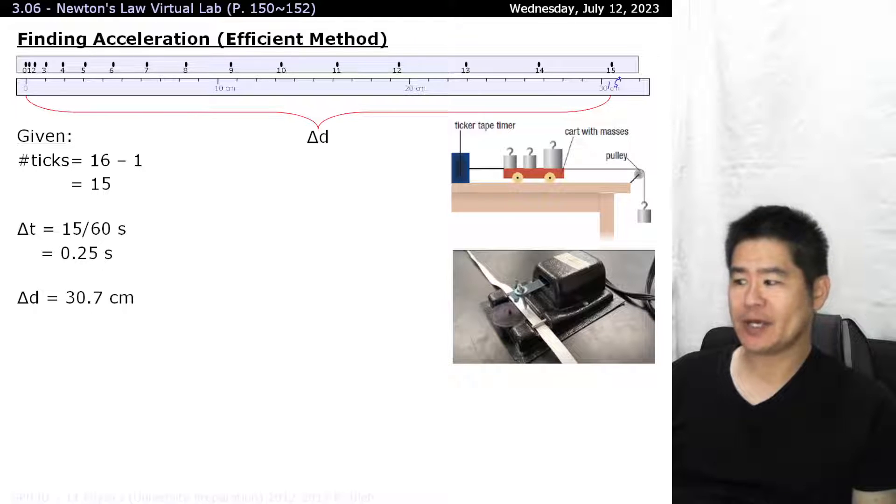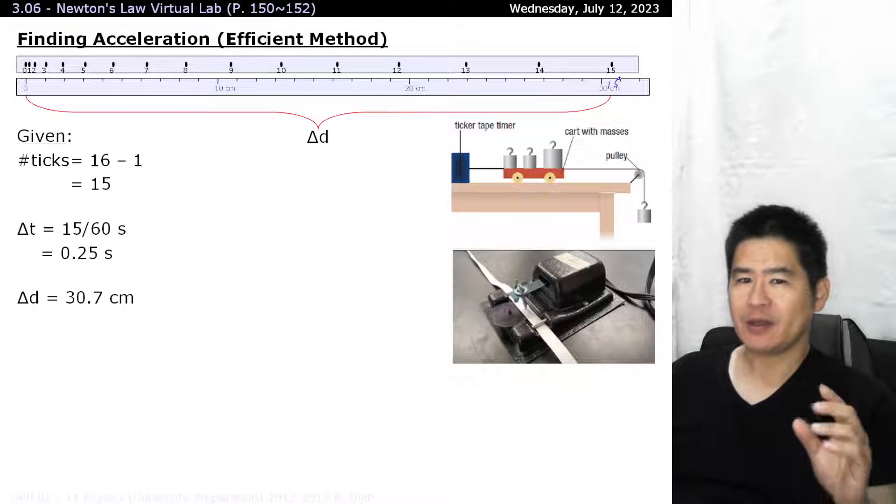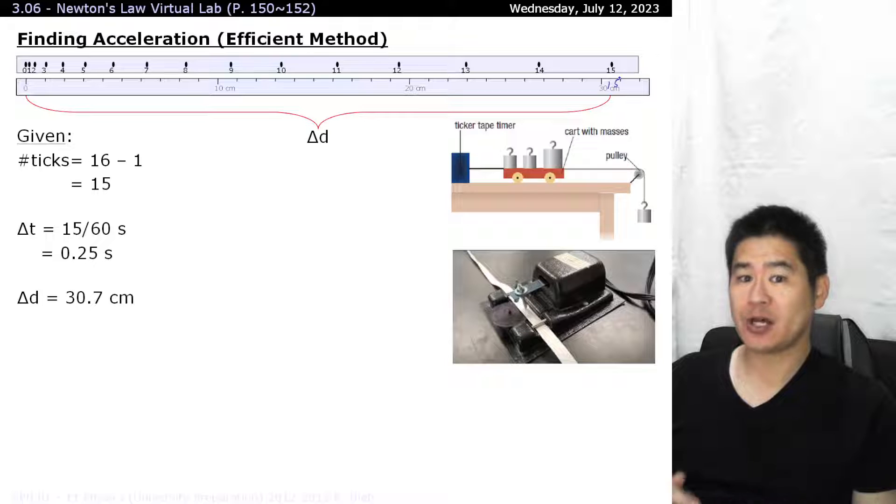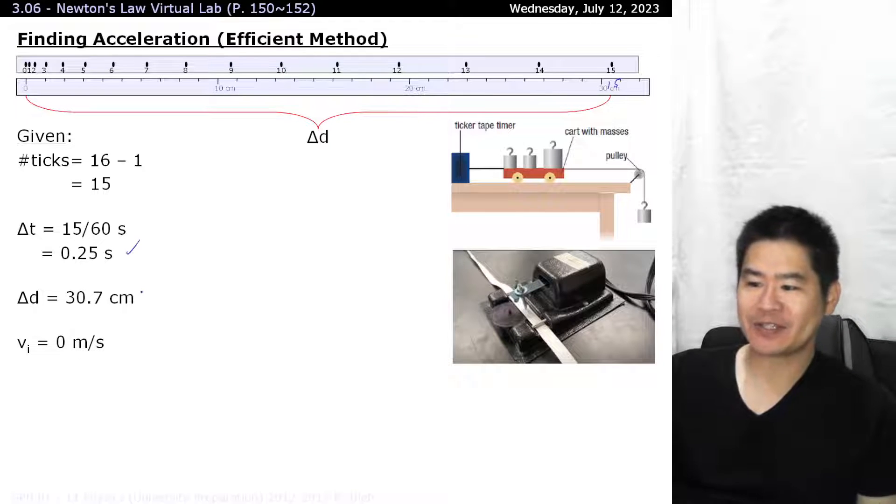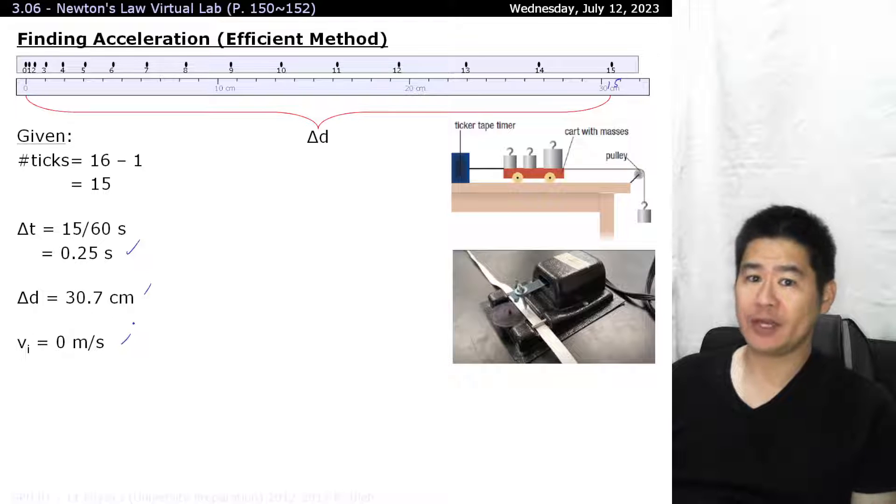One thing to keep in mind is that whenever you use the ticker timer, you want to ensure that you turn on the timer first before you let go of the tape. That way you ensure that the system starts off with a velocity of zero, because that's the last piece of the secret sauce. As you may know, in kinematics, as long as you have three givens, you can solve for everything else. So with time, displacement, and initial velocity, we can solve for acceleration by using this kinematic equation.